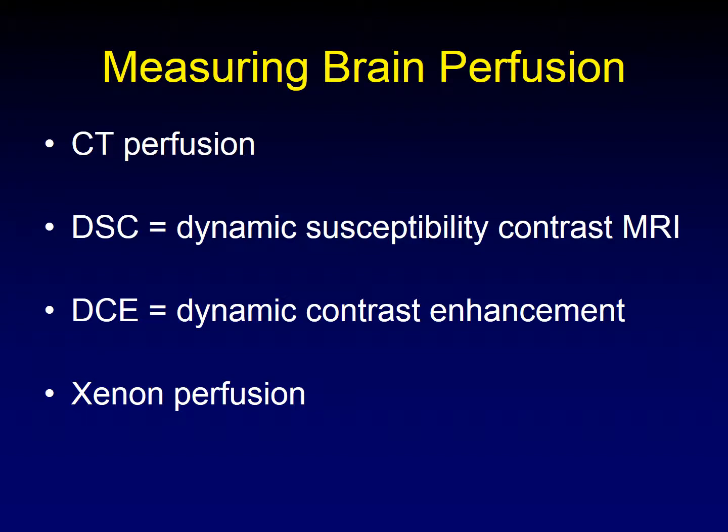There are a lot of different ways to measure brain perfusion. We can use CT perfusion, where we measure a bolus of iodinated contrast as it goes through the brain. We can use dynamic contrast enhancement on MRI, which is very similar to CT. We can use dynamic susceptibility contrast on MRI, where we're looking at blood flow and how it changes over time. And if we want to get quantitative, we can use xenon perfusion imaging.